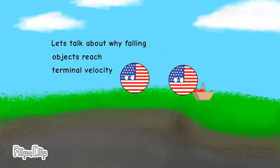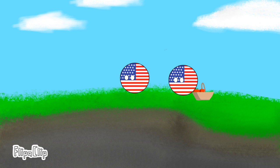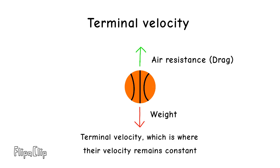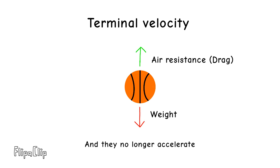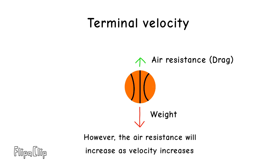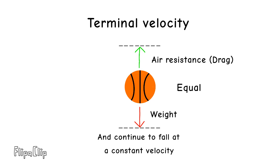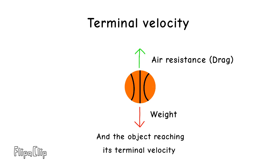Let's talk about why falling objects reach terminal velocity — which is where their velocity remains constant and they no longer accelerate. The air resistance will increase as velocity increases, with the drag acting upwards until it is equal to the force of gravity, and the object continues to fall at a constant velocity, reaching its terminal velocity.